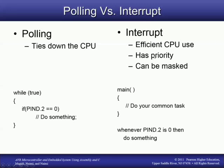We can choose which interrupts to use based on which one we want to have the highest priority, so if they happen at the same time, we know which event will be handled first. Another advantage is that interrupts can be masked, meaning you can enable or disable an interrupt by setting one bit, which can't be done with polling — that would require adding additional code.